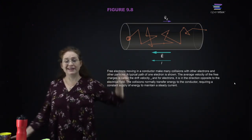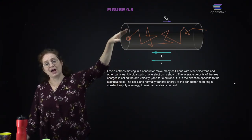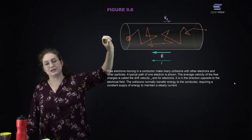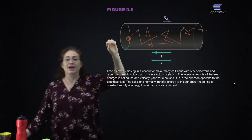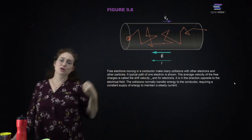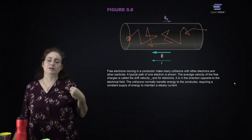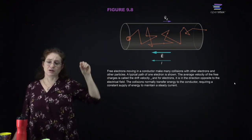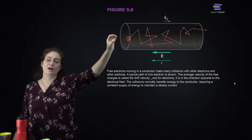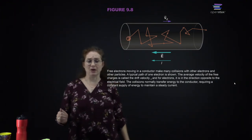In these collisions, the electron collides with atoms in the conductor and loses energy. So generally when you have current flowing in a wire, you're actually losing energy — the wire is going to heat up.